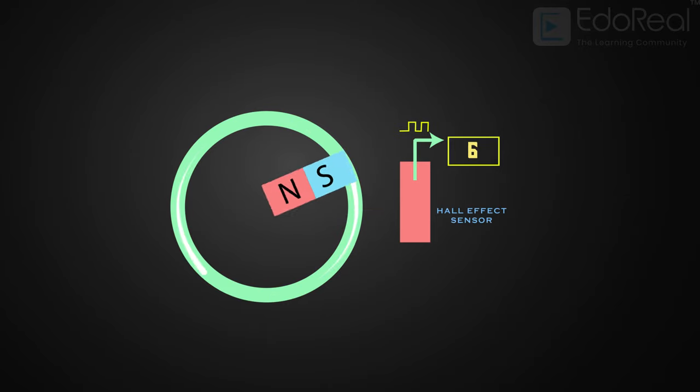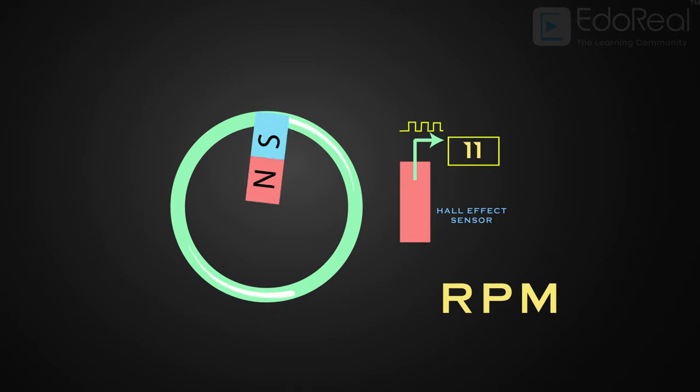When the magnets are away from the sensor, there will be no voltage. So every time it passes by, the sensor cuts the magnetic field and generates a pulse, and the counter increases. Each turn indicates one revolution. This is how revolutions per minute (RPM) is calculated.